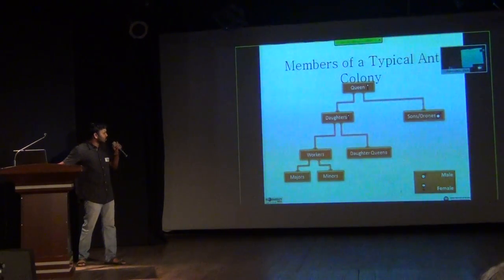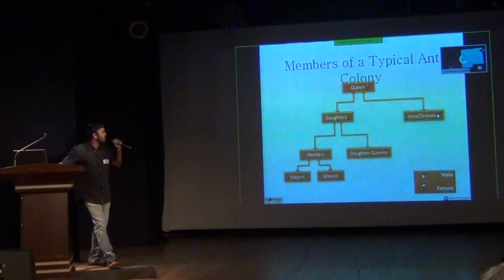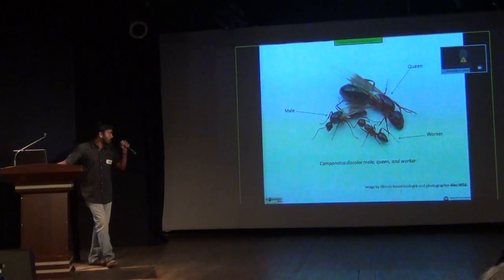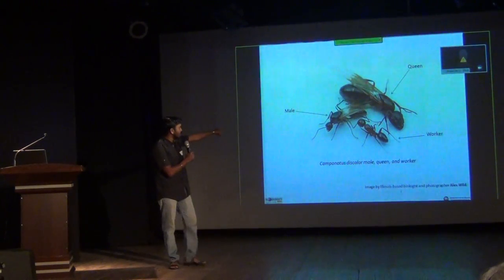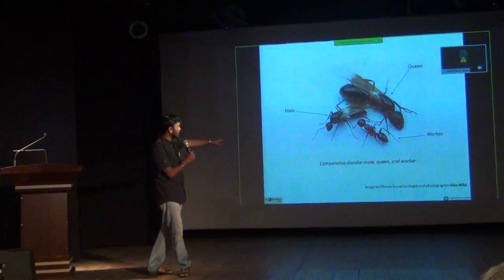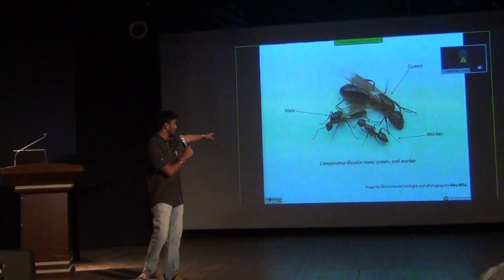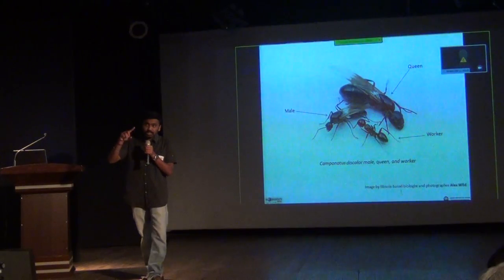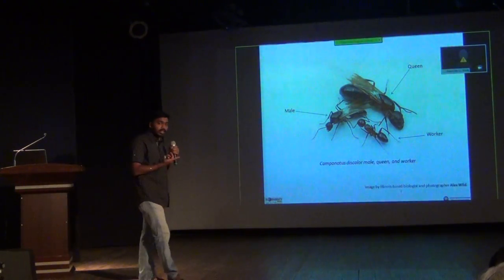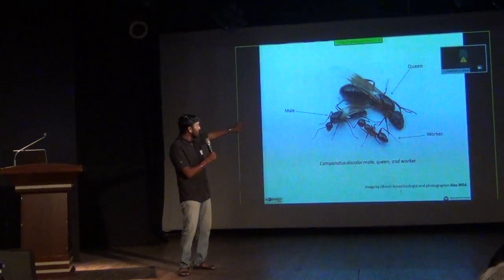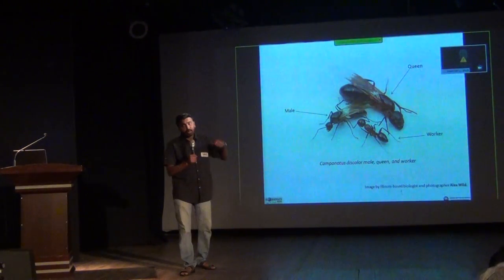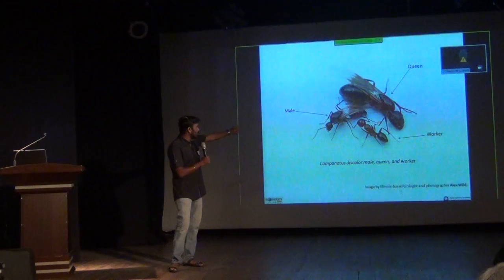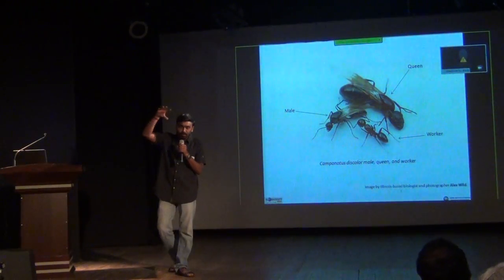This is what ant colonies are made up of. There will be a queen, daughters, and workers. What is interesting is these three kinds of ants belong to the same species: the queen is large, the male drone is a slightly smaller version, and then you have the worker. Queens and males are winged; the worker is not. After the queen and the male mate, the queen sheds her wings and becomes flightless.